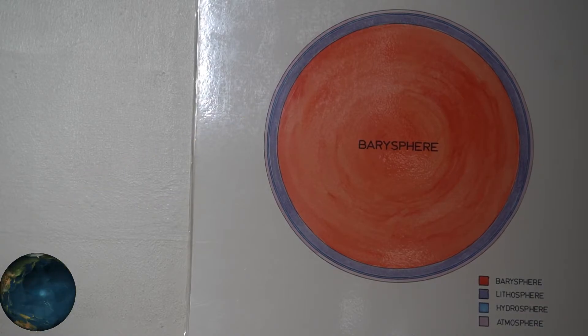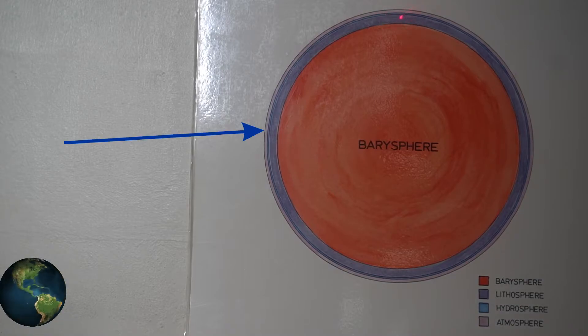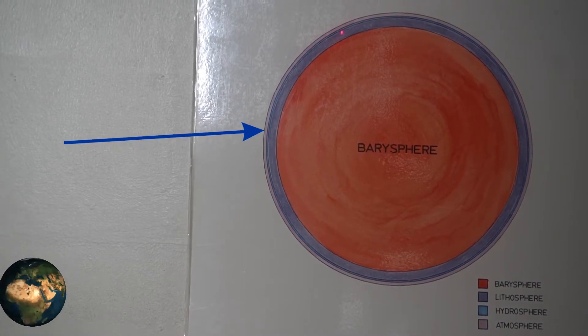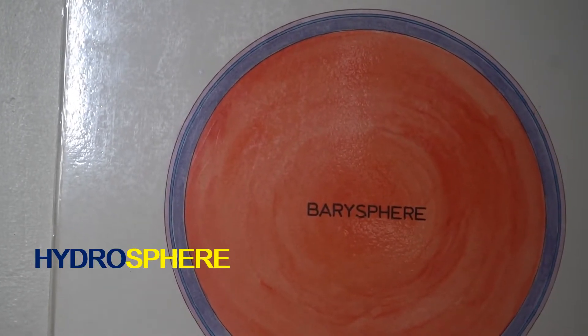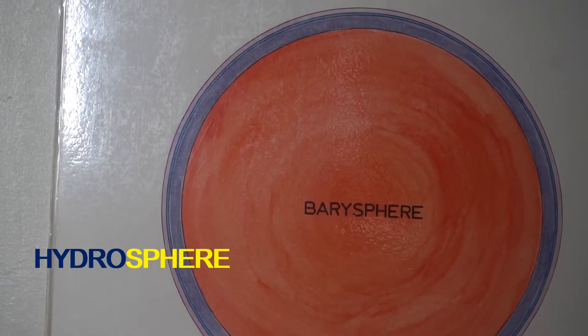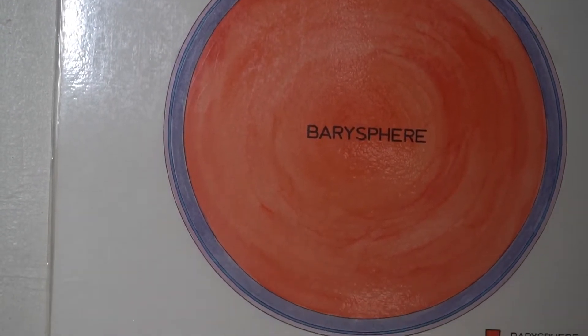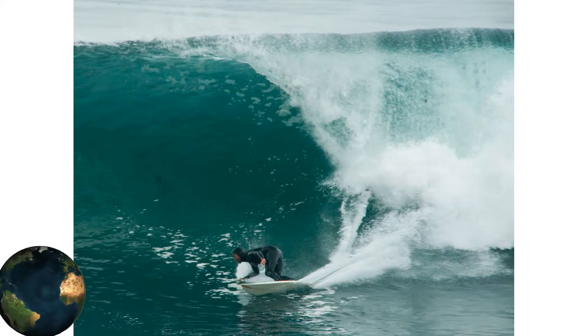Then on top of the lithosphere, you see this darker blue line right on top — it's even thinner. That is called the hydrosphere. All of the water on the surface of the earth is the hydrosphere. 'Hydro' comes from the Greek word meaning water.